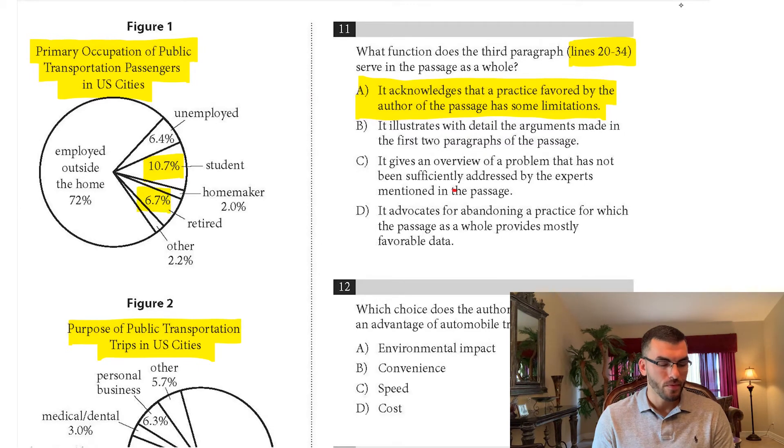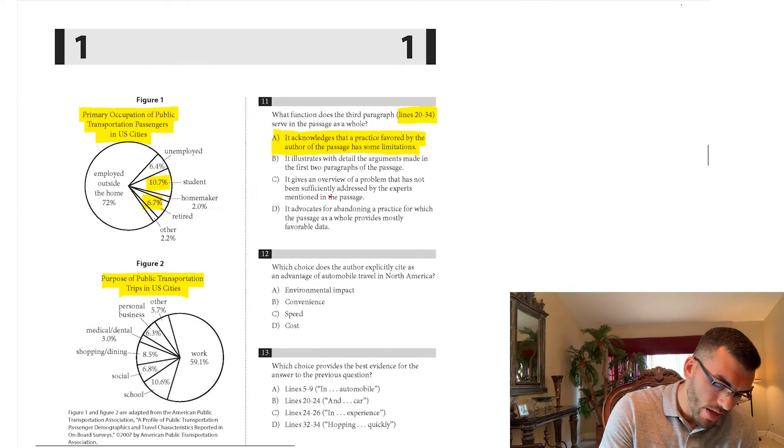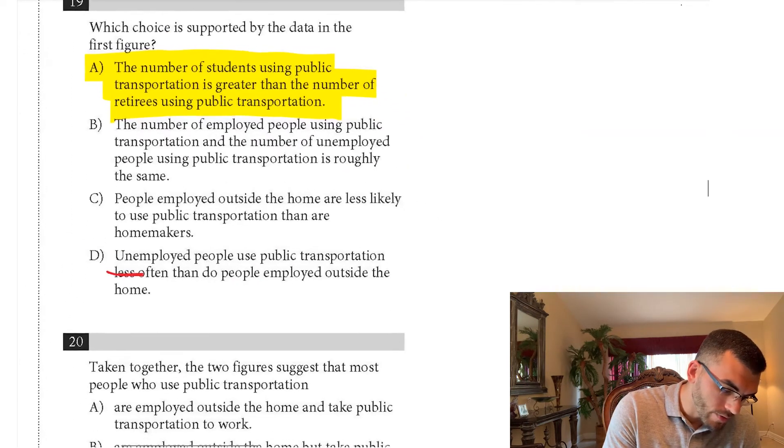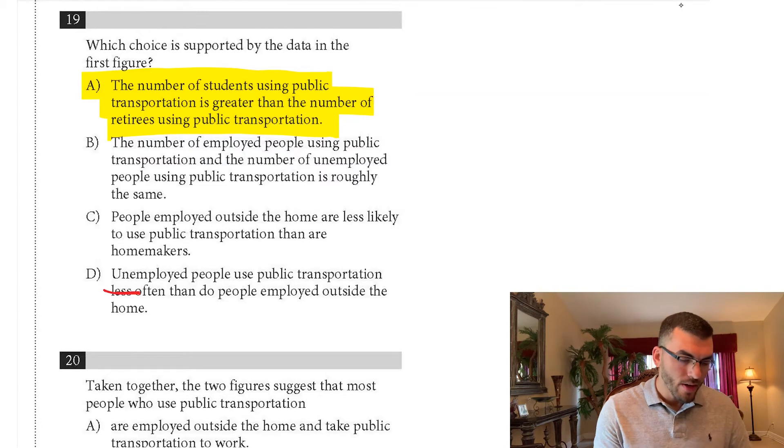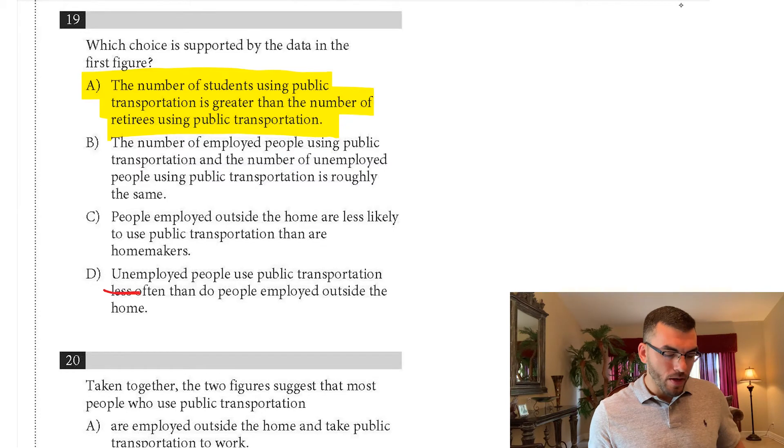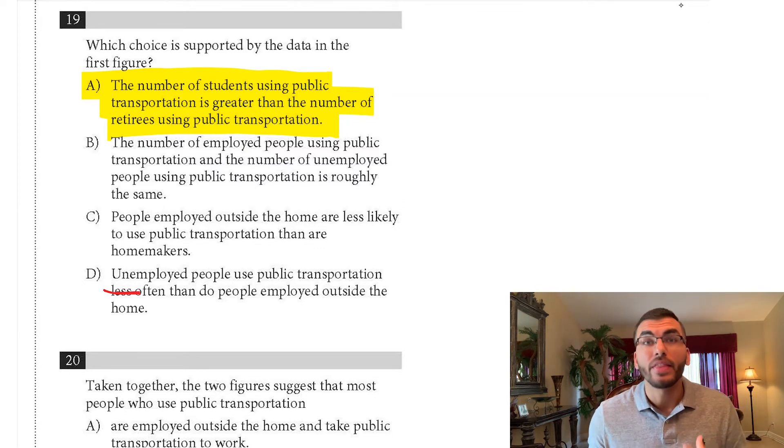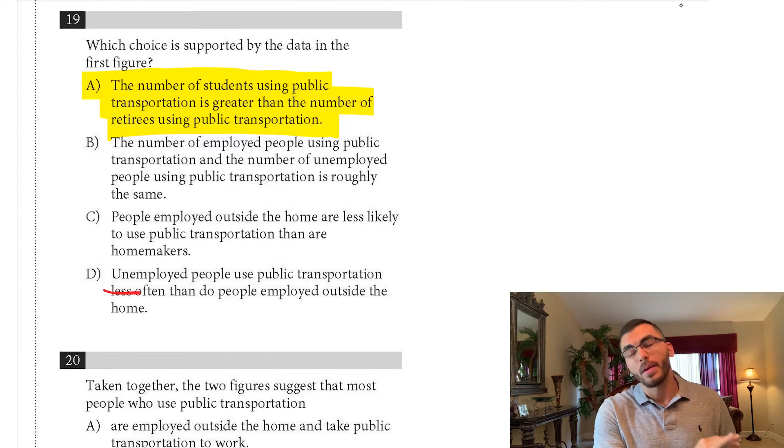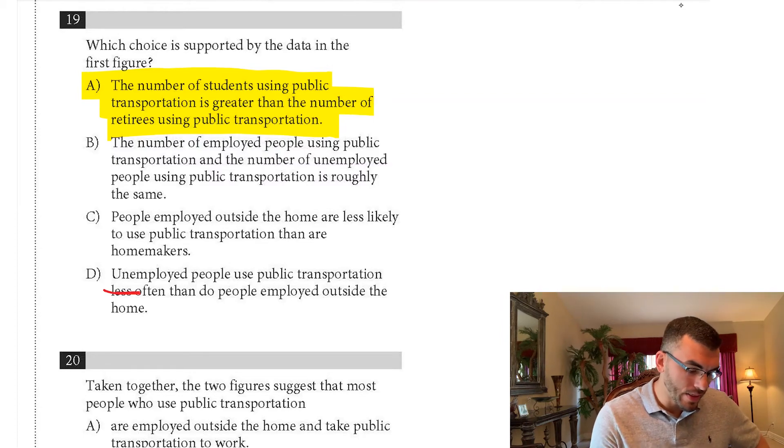So there are more students than retirees that take public transportation. If you were thinking along the lines of choice D, this word right here is what makes it wrong. Less often. Unemployed people use public transportation less often than people employed outside the home. There's nothing that says in that chart about how often they ride public transportation. It simply just says what their job is. So it's a really important distinction. It's that one little word that made the entire answer choice D wrong. So number 19, the correct answer is A.